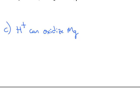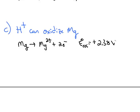And then for part C, true or false, H+ can oxidize magnesium. So the magnesium is being oxidized. We find that reversed in the table and we flip it to give us this oxidation. The standard oxidation potential is positive 2.38 volts.